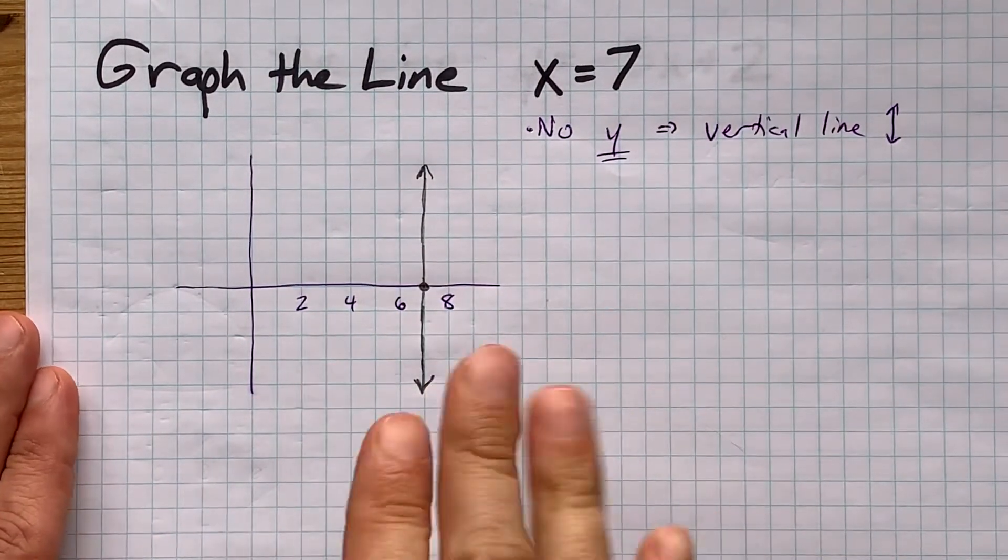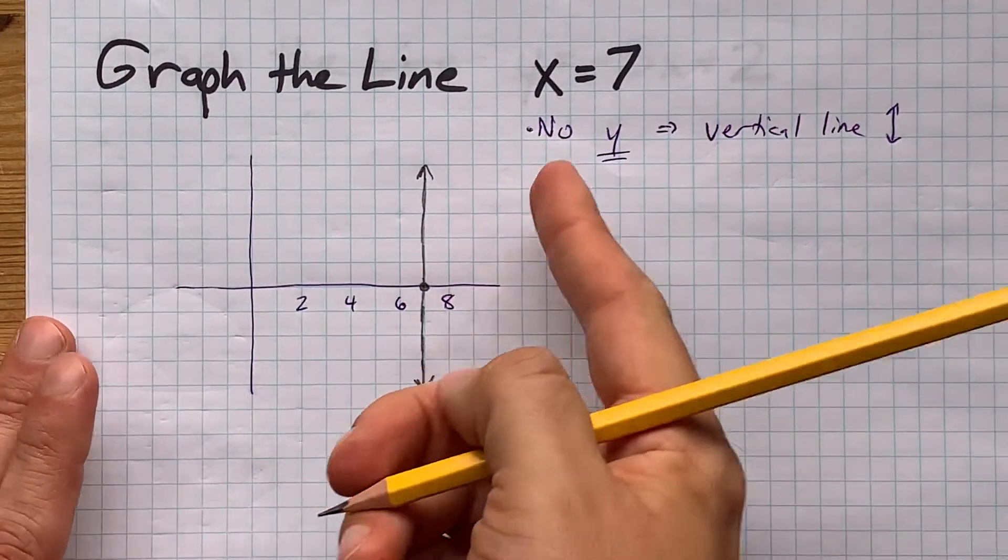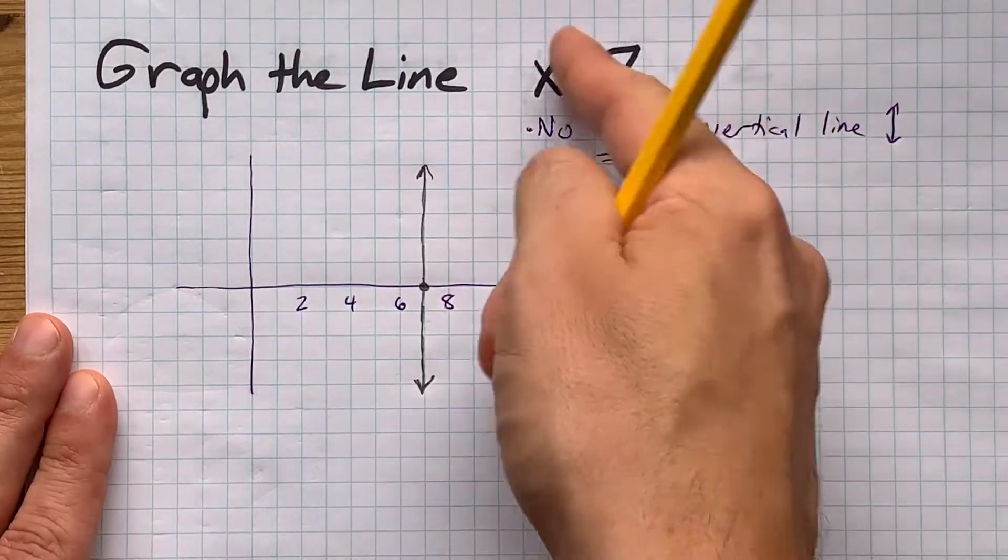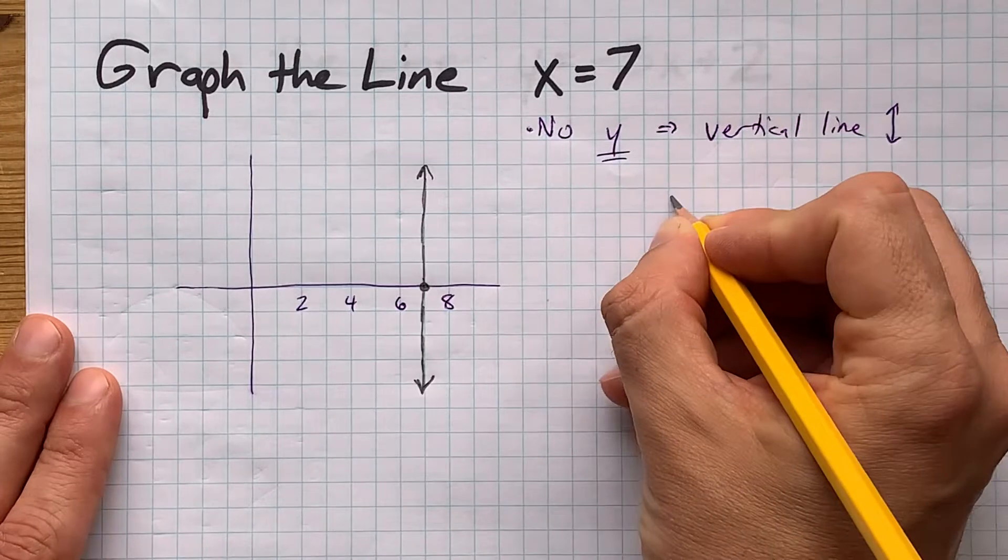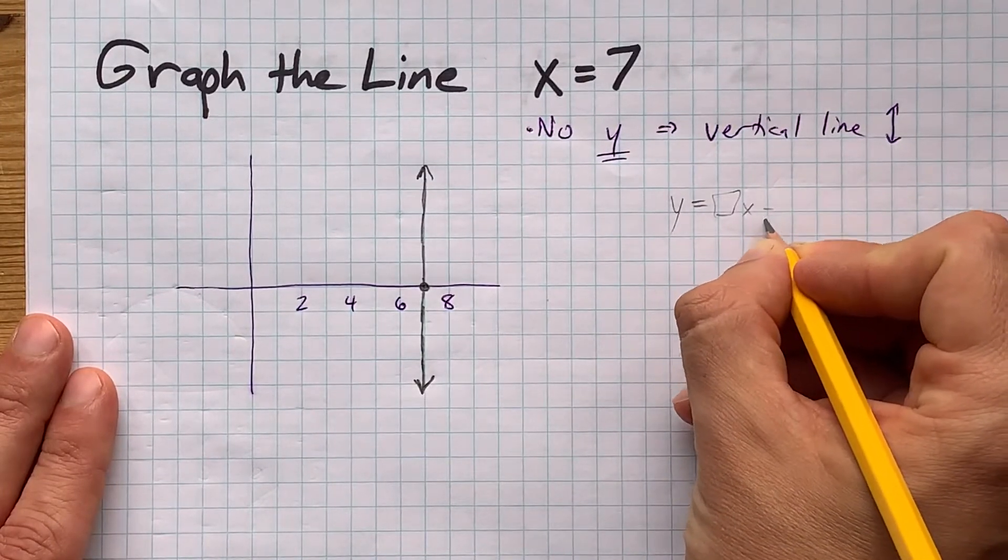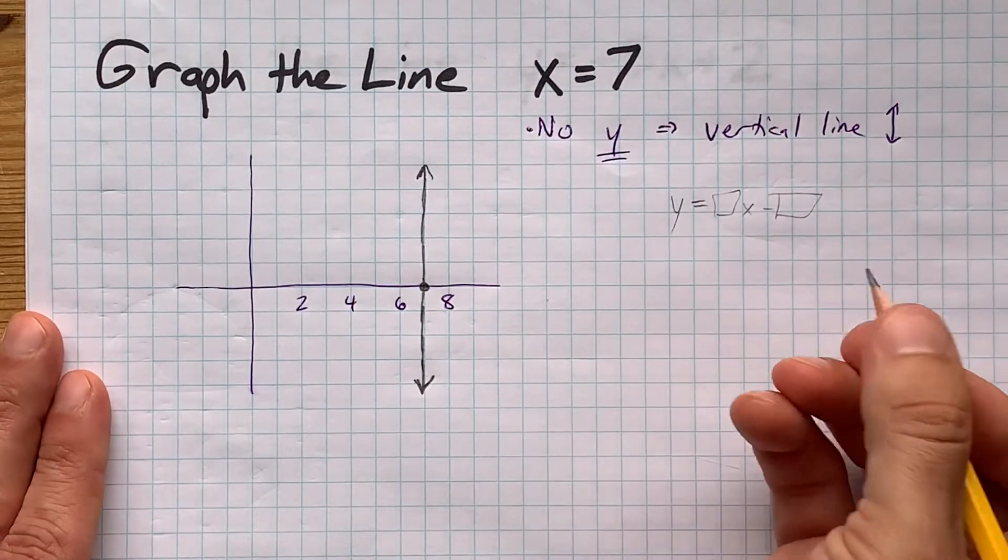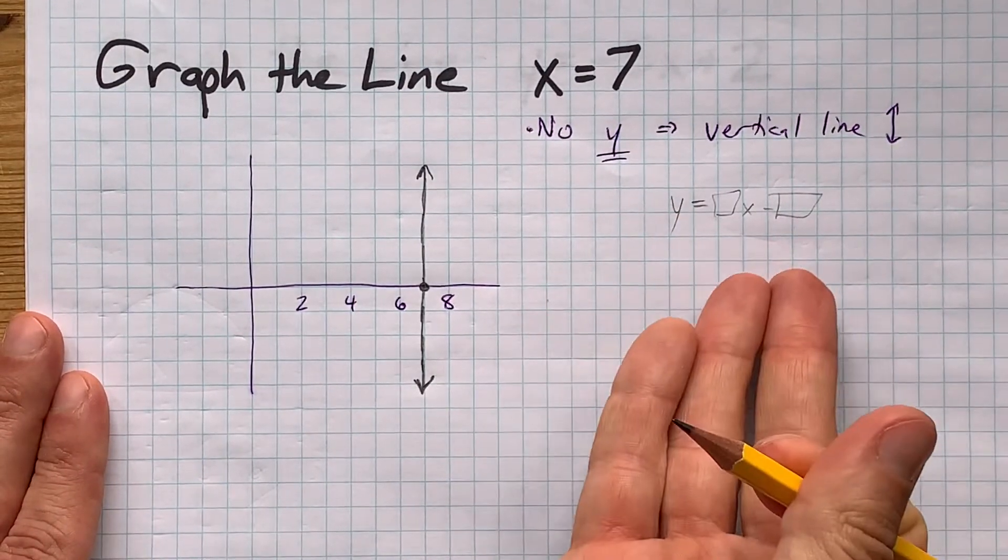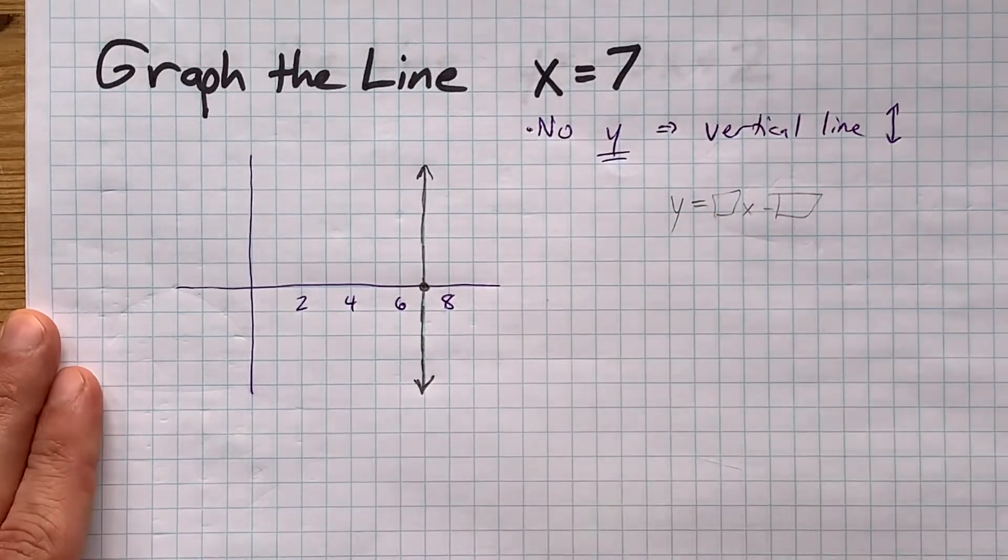There is me having graphed the line. But I want to show you why it's important that there's no y in this equation. Often your lines will be y equals something times x plus or minus something else - y equals mx plus b form, or standard form, which have x and y on the same side of the equation.